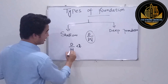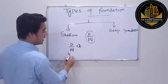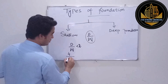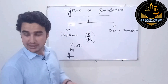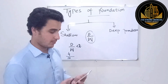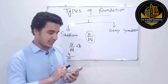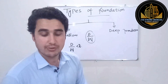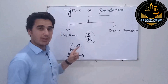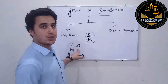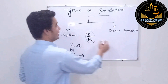For example, if the depth is 4 meters and the width is 10 meters, then 4 divided by 10 gives us 0.4. Since 0.4 is less than 2, a foundation of this type will be a shallow foundation.